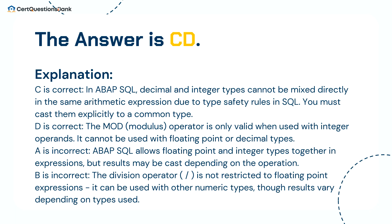A is incorrect: ABAP SQL allows floating point and integer types together in expressions, but results may be cast depending on the operation. B is incorrect: the division operator is not restricted to floating point expressions — it can be used with other numeric types, though results vary depending on the types used.